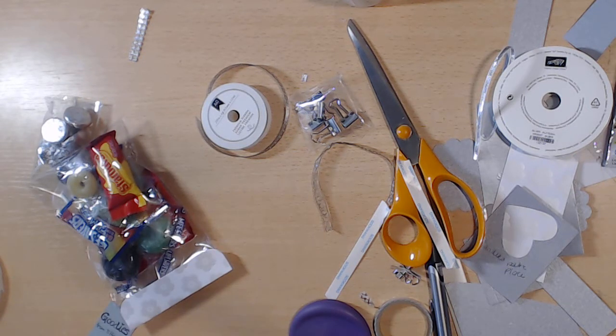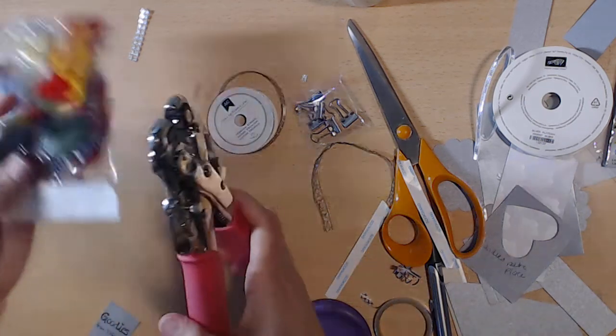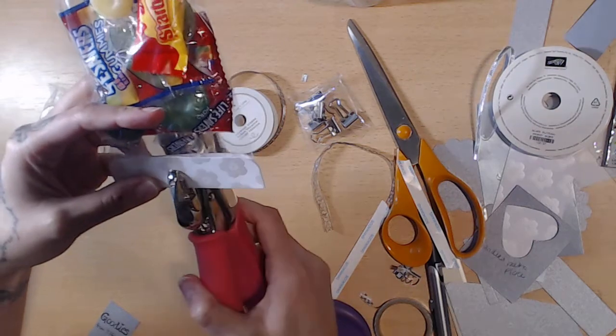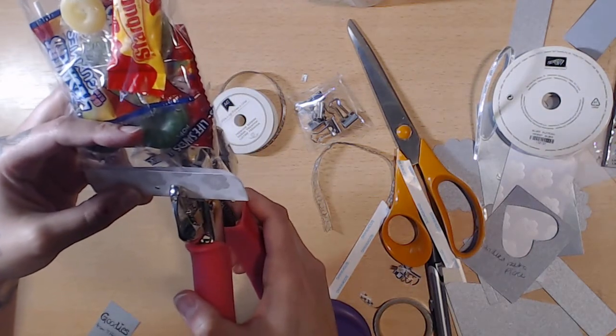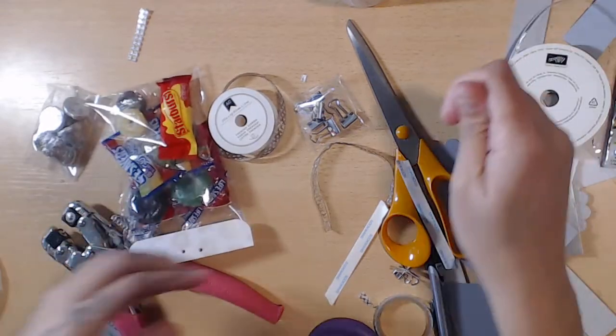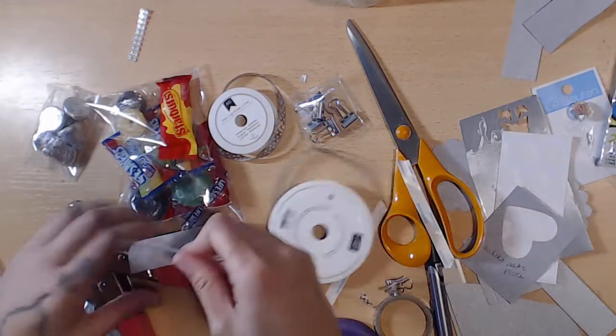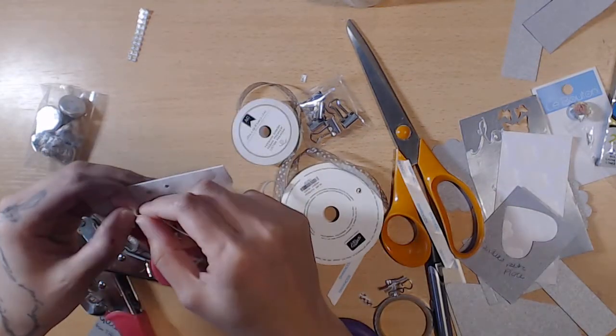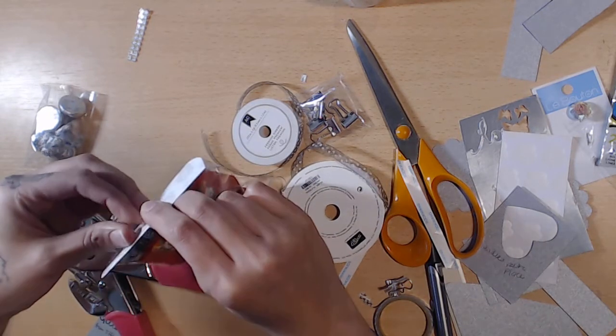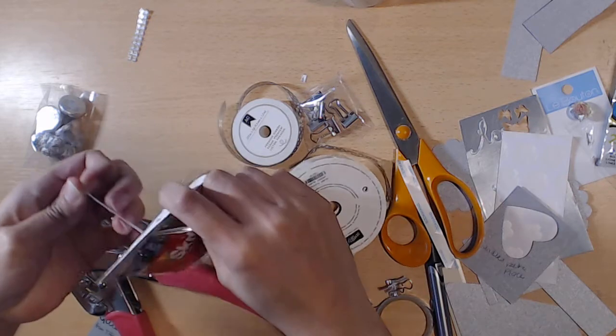And then just to give it a little extra pizzazz, I am going to punch two holes in the top and add a ribbon. So you can use your ribbon scraps, and again I'm just eyeballing it. I'm hoping it's in the middle - if it's not, it's no big deal. And I'm going to use this ribbon here.